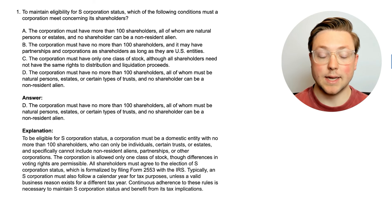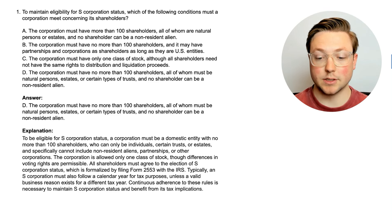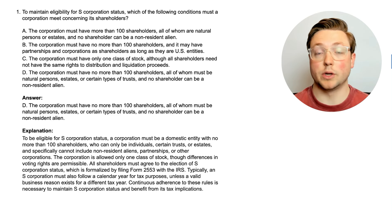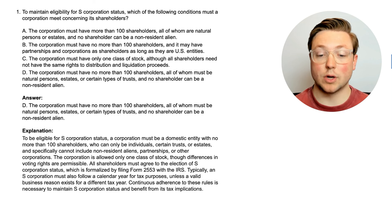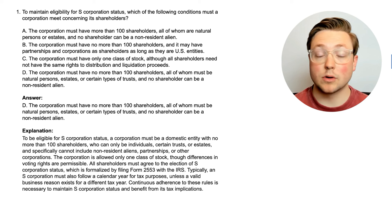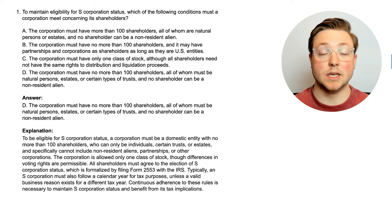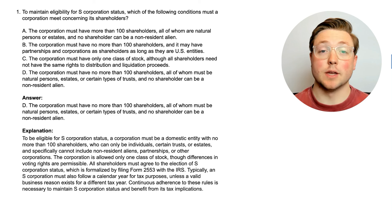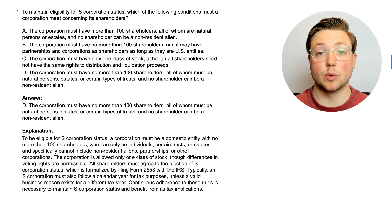So we learned here there are multiple requirements to be an S-corporation. You have to have less than 100 shareholders, who can only be basically individuals or some kinds of trusts. Can't be non-resident aliens, can't be other corporations, can't be partnerships — mainly just individuals or things treated as individuals, like trusts or estates. They can only have one class of stock, and they all have to agree to be an S-corporation. Let's go ahead and go to the next question.